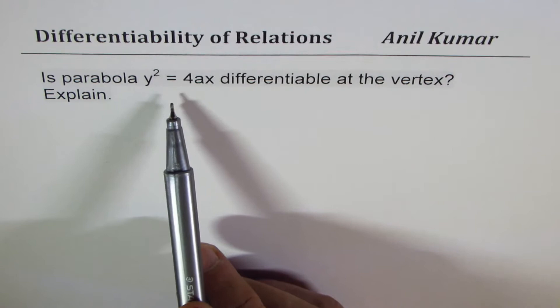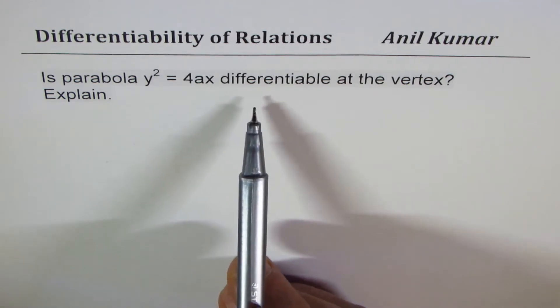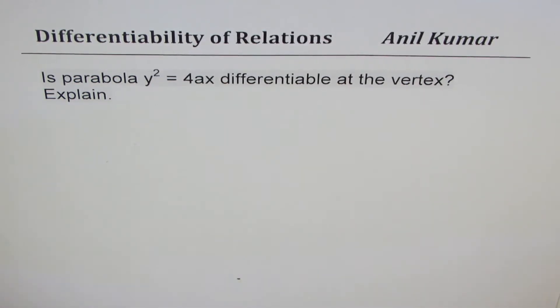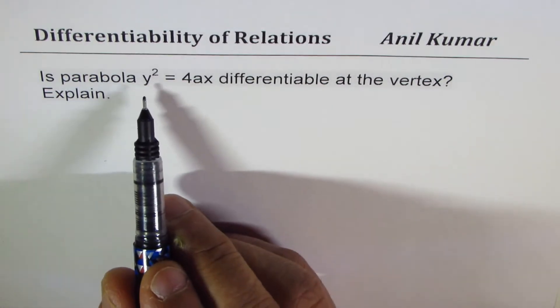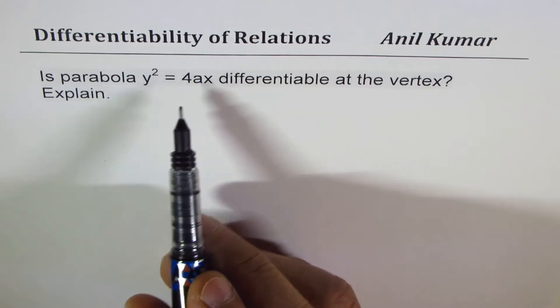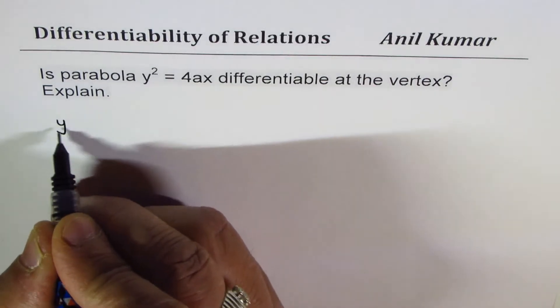Now normally when you see the equation of a parabola, you see it in terms of y = x², right? But here note that we are given the equation as y² = 4ax.